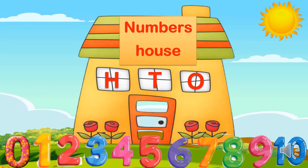We have here a numbers house. It has three rooms. The first room is called the ones room — it is the smallest room, which means it takes only a one-digit number. The second room is the tens room. If we have two-digit numbers, we put them in ones and in tens. The next room is called the hundreds room. If we have three-digit numbers, we put them in three rooms.